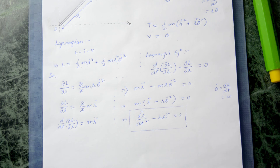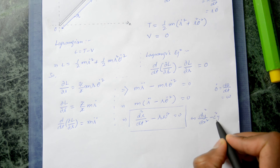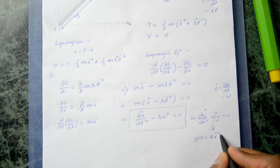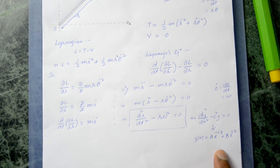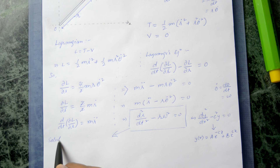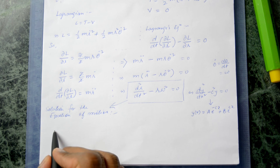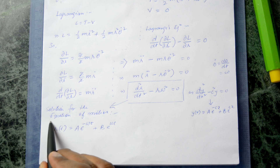This is a standard differential equation of the form d²y/dx² - c²y = 0, which has the well-known general solution y(x) = A·e^(-cx) + B·e^(cx). Therefore the solution for the radial displacement is R(t) = A·e^(-ωt) + B·e^(ωt).